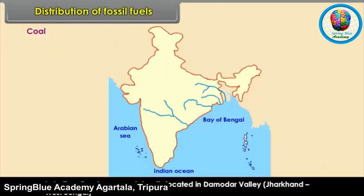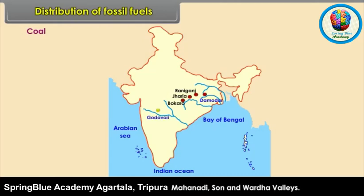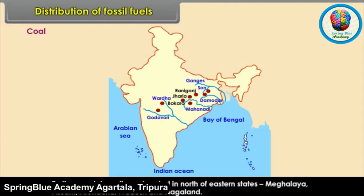In India, Gondwana coal deposits are located in the Damodar Valley, Jharkhand and West Bengal. Important coal fields are Jharia, Raniganj and Bokaro. Other coal fields are found in the Godavari, Mahanadi, Son and Wardha Valleys. Tertiary coal deposits are located in the Northeastern states of Meghalaya, Assam, Arunachal Pradesh and Nagaland.